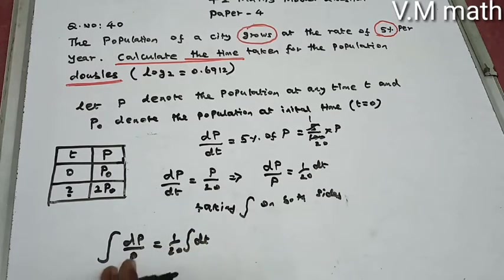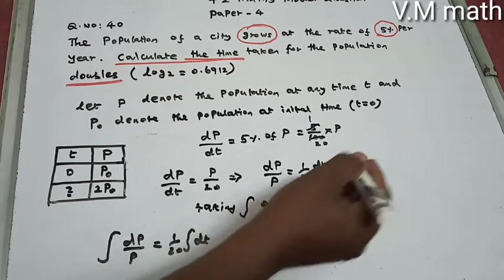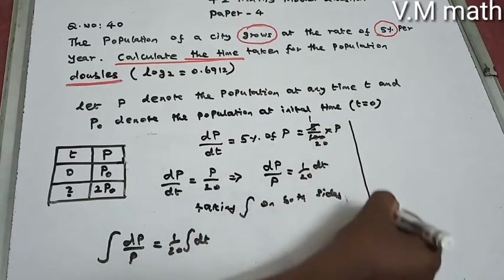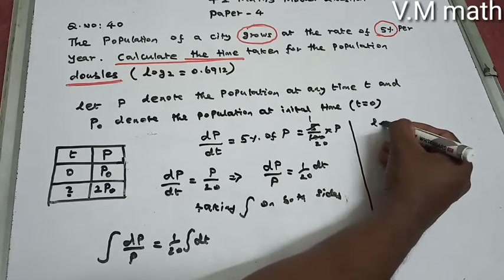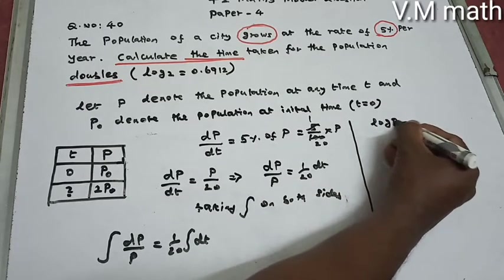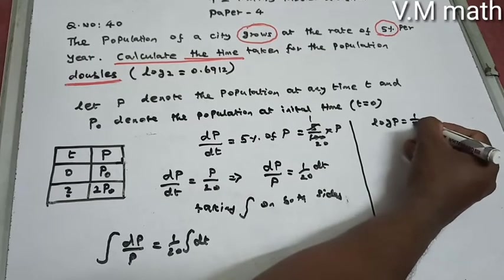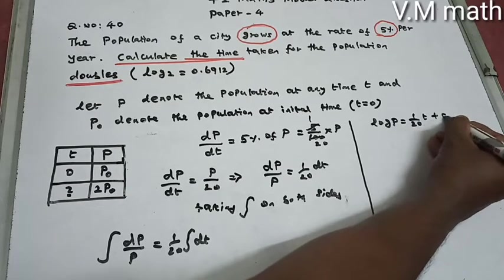If we integrate the left side we get log P, and the right side gives 1 by 20 times t, plus a constant C. So log P equals 1 by 20 times t plus C.